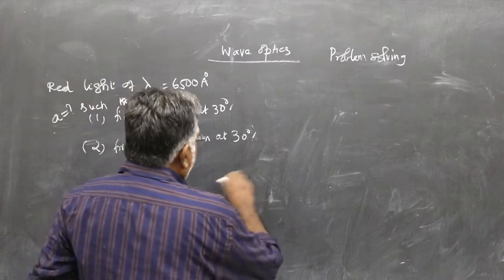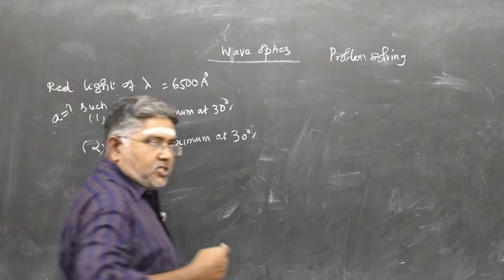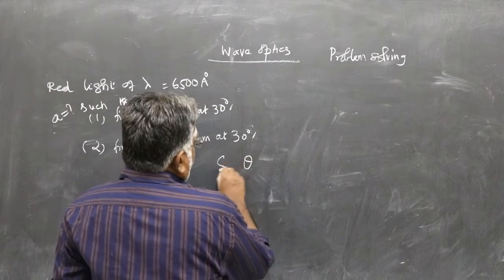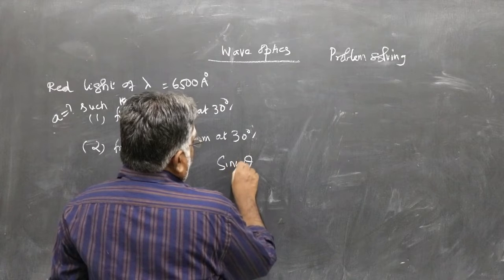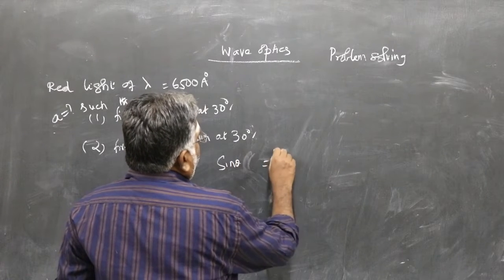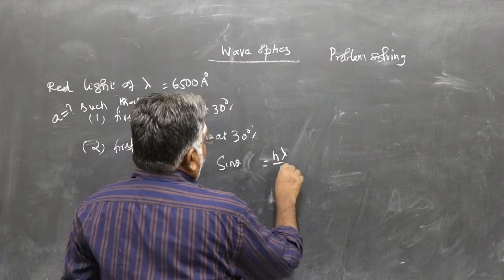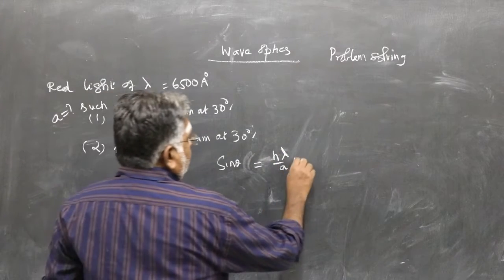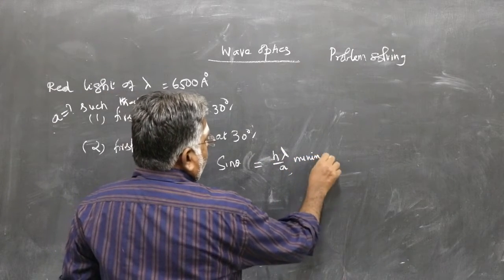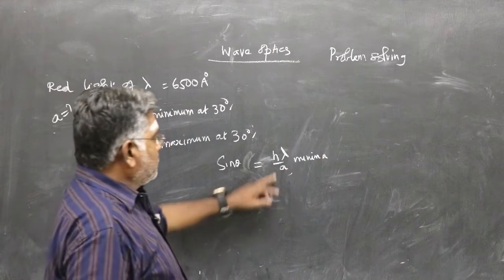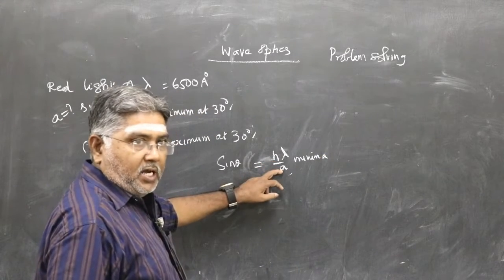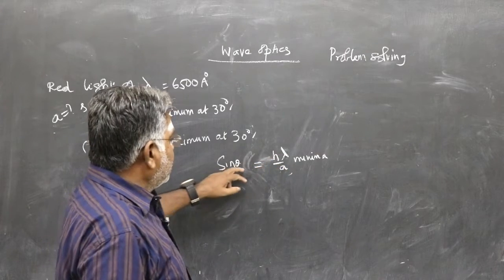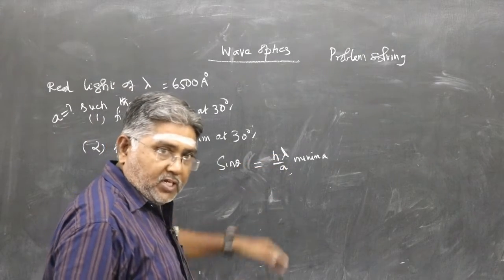The condition for minimum is: sin θ = nλ/A. First minimum means put n = 1, so sin θ = λ/A. Second minimum means put n = 2, so sin θ = 2λ/A. Like that you will proceed.